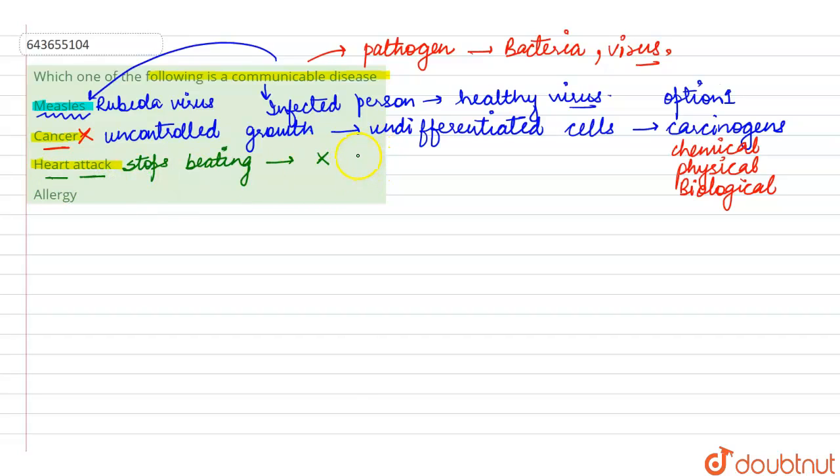A person who is getting a heart attack has its intrinsic reasons, not the extrinsic reasons. That means there are no pathogens involved in this, so that means a person cannot transmit this to a healthy person. So this is also a wrong option.